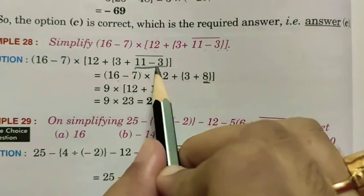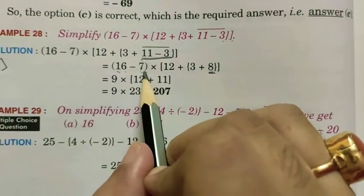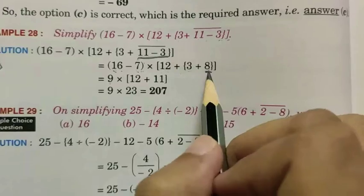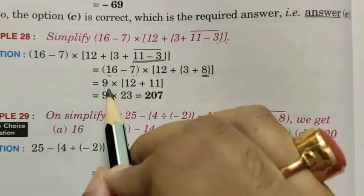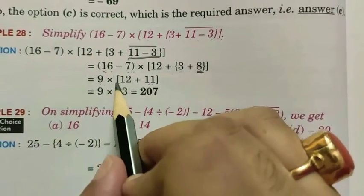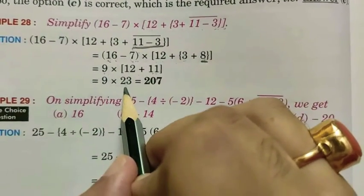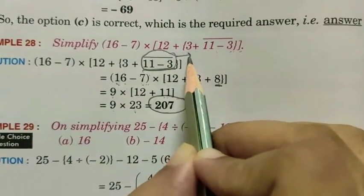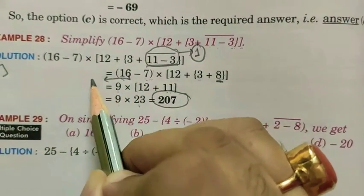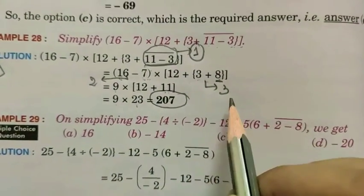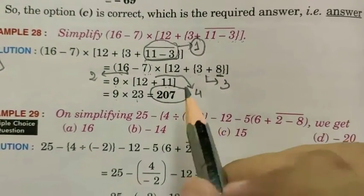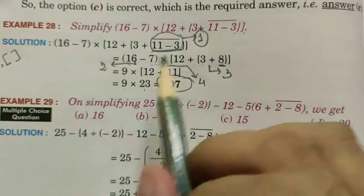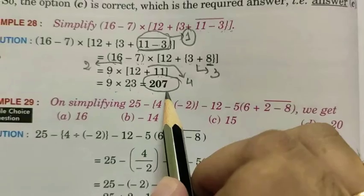Next, after the bar bracket, we do the small bracket: 16 minus 7 equals 9. Then the curly bracket: 8 plus 3 equals 11. Then inside the big bracket we do the addition: 12 plus 11 equals 23. Then the multiplication gives the final answer: 28 into 23 equals 207. So the sequence was: first bar bracket, second small bracket, third curly bracket, fourth big bracket — and after all brackets were complete, we performed the multiplication.